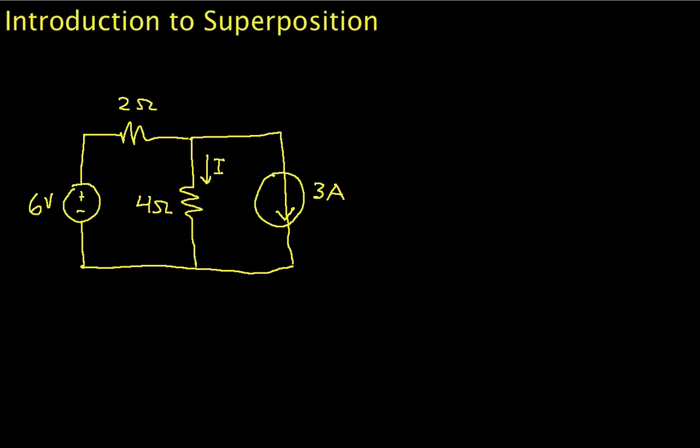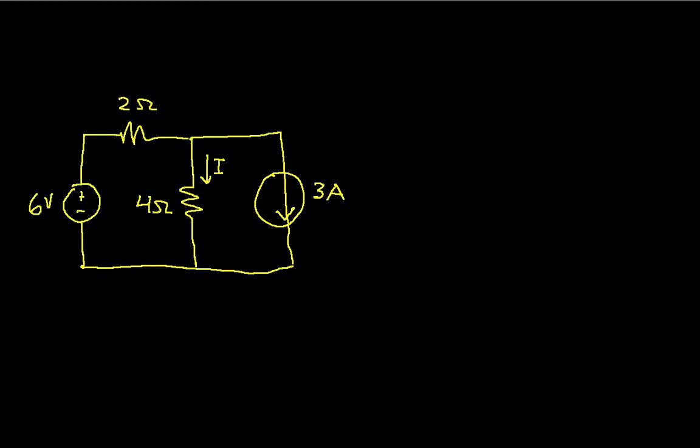In this video, we introduce the principle of superposition. We'll talk a little bit about why it's useful, and then we'll do an example to show how you apply it to solve circuits. Superposition basically says that any voltage or current in a circuit is the sum of the voltages or currents due to each individual independent source alone.